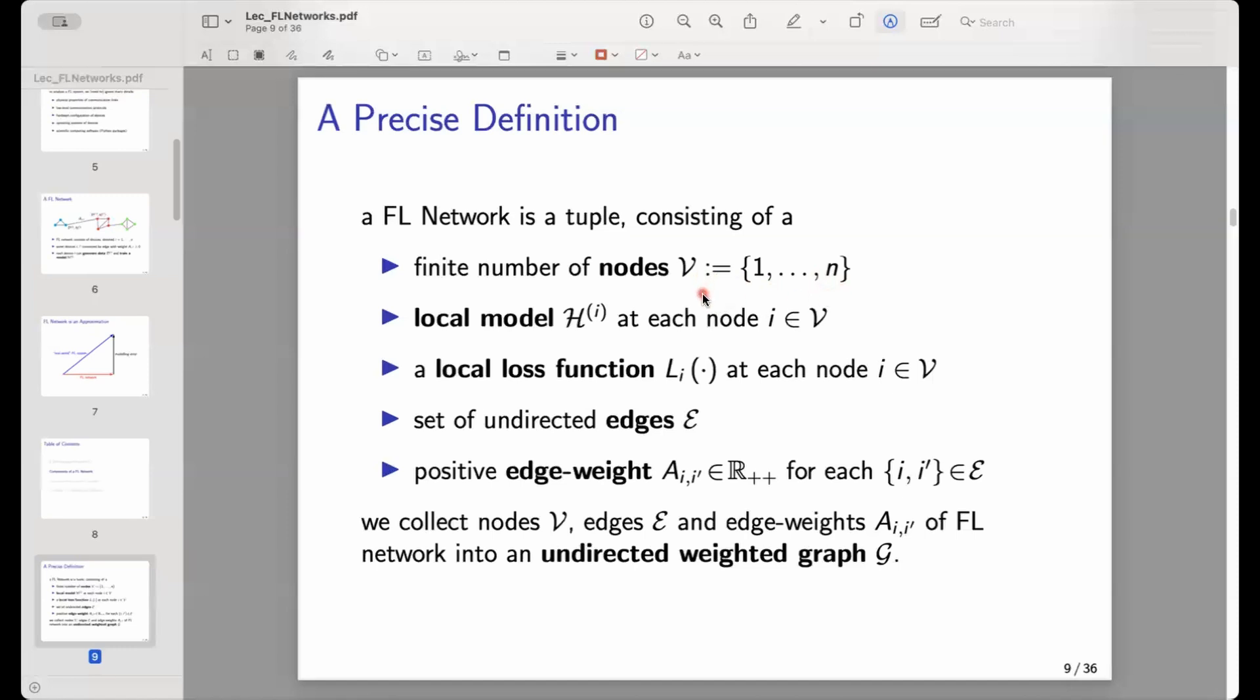Each node represents a device, and the device in our federated learning perspective can train a model or is able to train a local model. So each device carries a local model, and this local model could be different at different nodes. One node might carry a linear model.